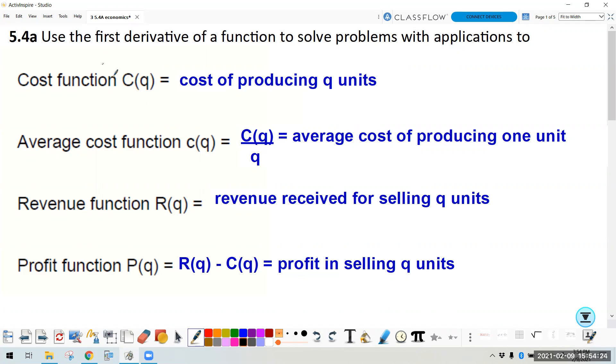So a cost function for a company is the cost of producing units. When you think of all of these equations that we're going to work through today, all these problems, we're the company, we are the producer of the items or the units. You are not the consumer, you're not the shopper. So the cost function is what it costs to produce whatever product that company is selling. The average cost is you take the cost function and divide by the number of units to get the average cost per one unit.